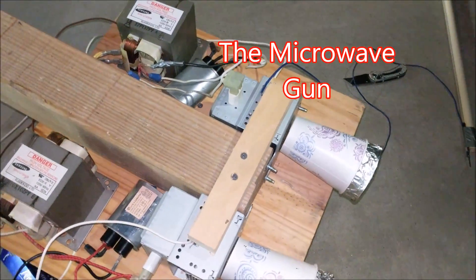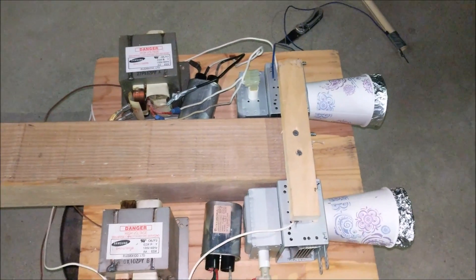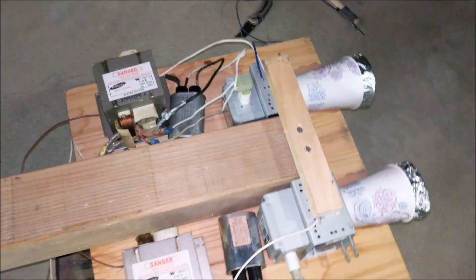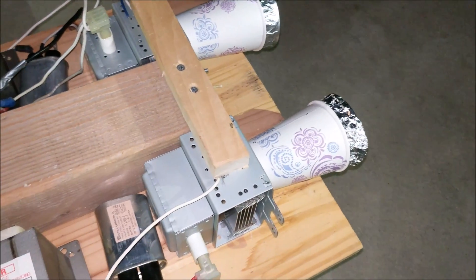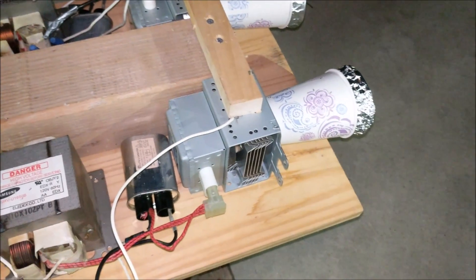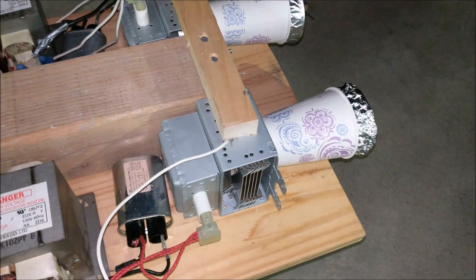So pretty much what this thing does is it shoots microwaves like you have in your normal microwave, but it shoots them in a beam out of these cups. This allows it to light light bulbs and do lots of other cool things microwaves can do.